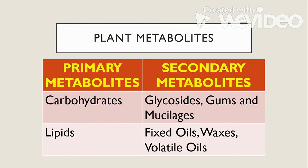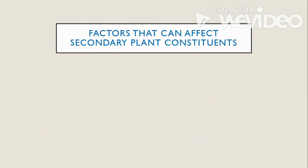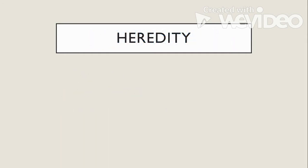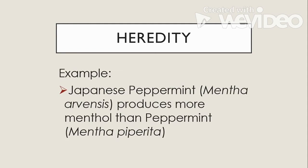We also have factors that can affect secondary plant constituents: heredity, ontogeny, and environment. Heredity is the genetic relationship between successive generations of organisms. For example, Japanese peppermint or Mentha arvensis produces more menthol than the ordinary peppermint or Mentha piperita, meaning the Japanese variety contains more menthol than the ordinary one.